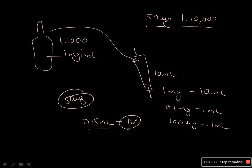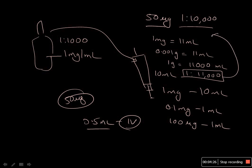Now if you want to check the dilution is really 1:10,000, how will we check that? Let's suppose you put 1 mg into 10 ml—that means the concentration is 1 mg in 11 ml of this syringe. We can rewrite this as 0.001 mg in 11 ml, or 1 gram in 11,000 ml.